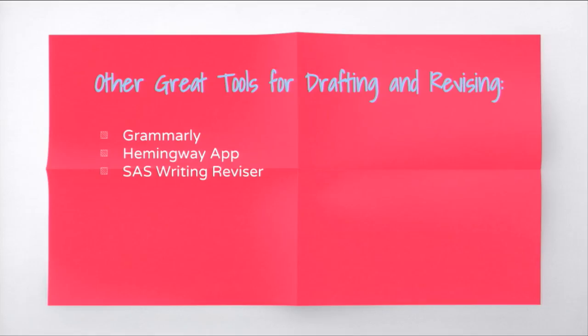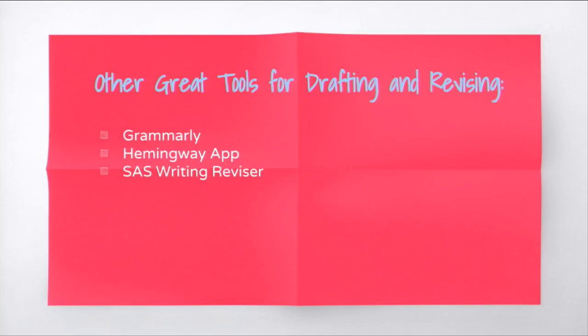A couple of other tools worth exploring on your own: Grammarly is a nice proofreading tool for mechanics help. The Hemingway App — if you paste a chunk of writing in — gives feedback on readability, whether it's too wordy, and the general level of writing. Another tool is the SAS Writing Revisor, a Google Doc add-on I use with seniors. It doesn't just fix errors for you — it says things like, 'You might have an issue with subject-verb agreement here, check this out,' so students have to engage with the problem.